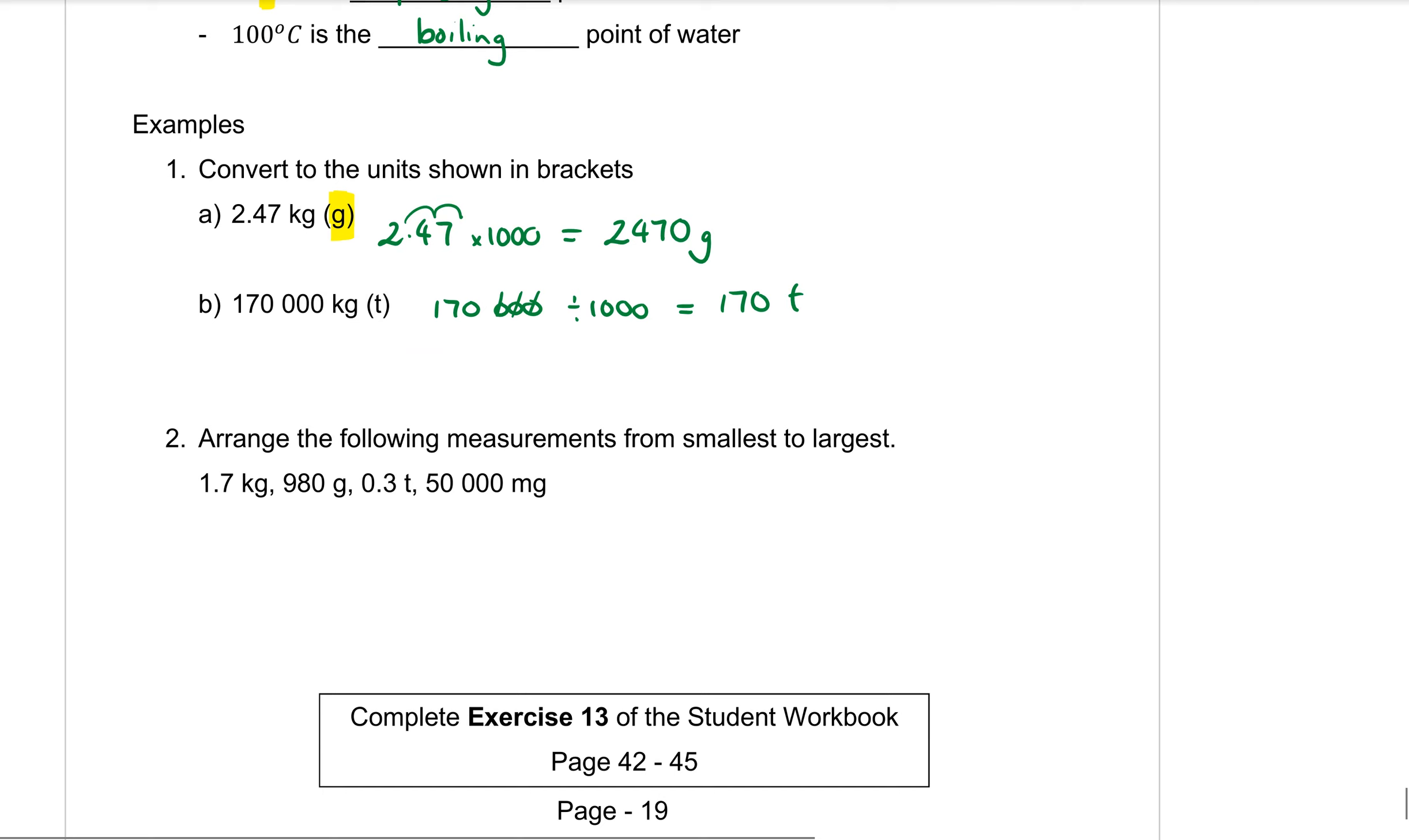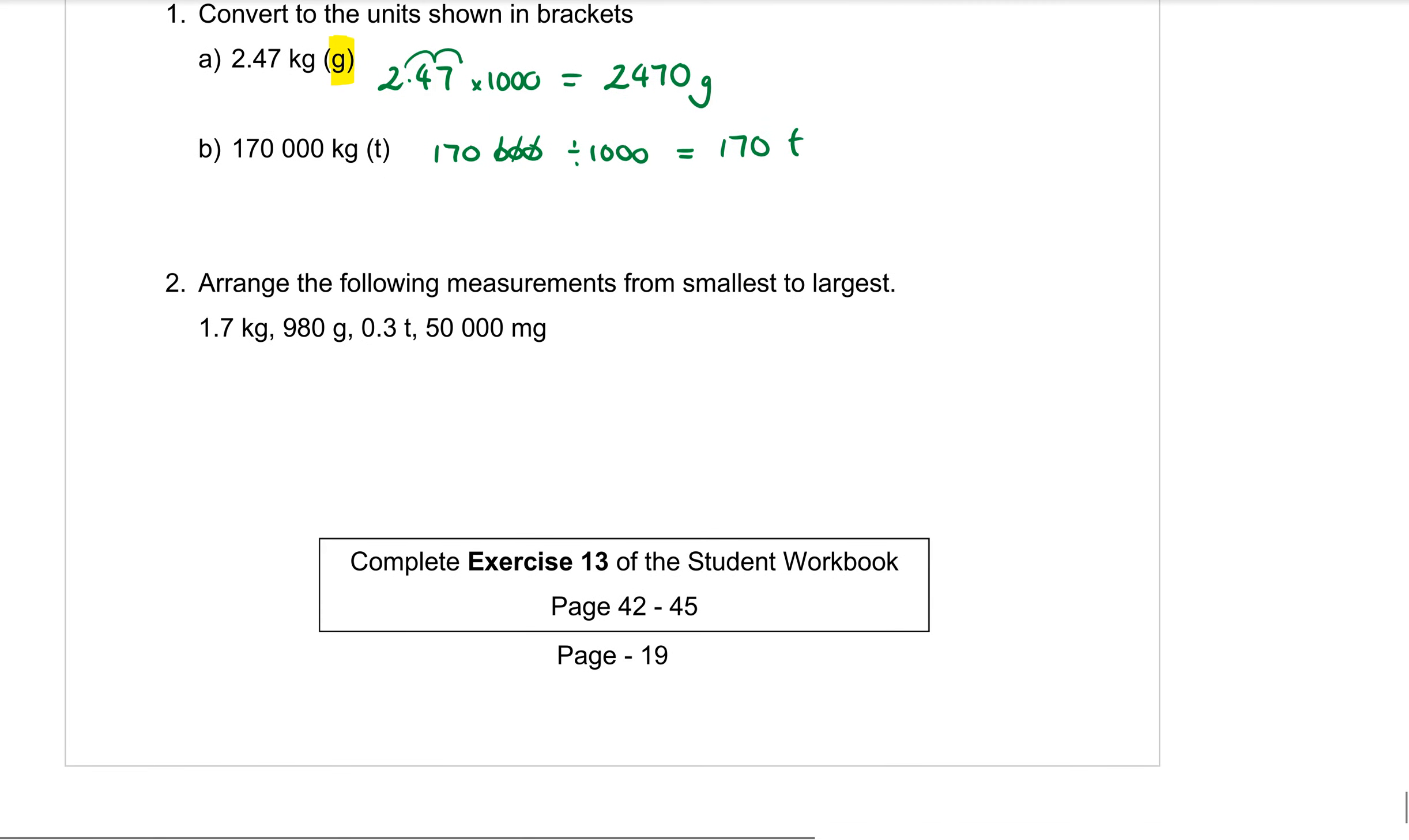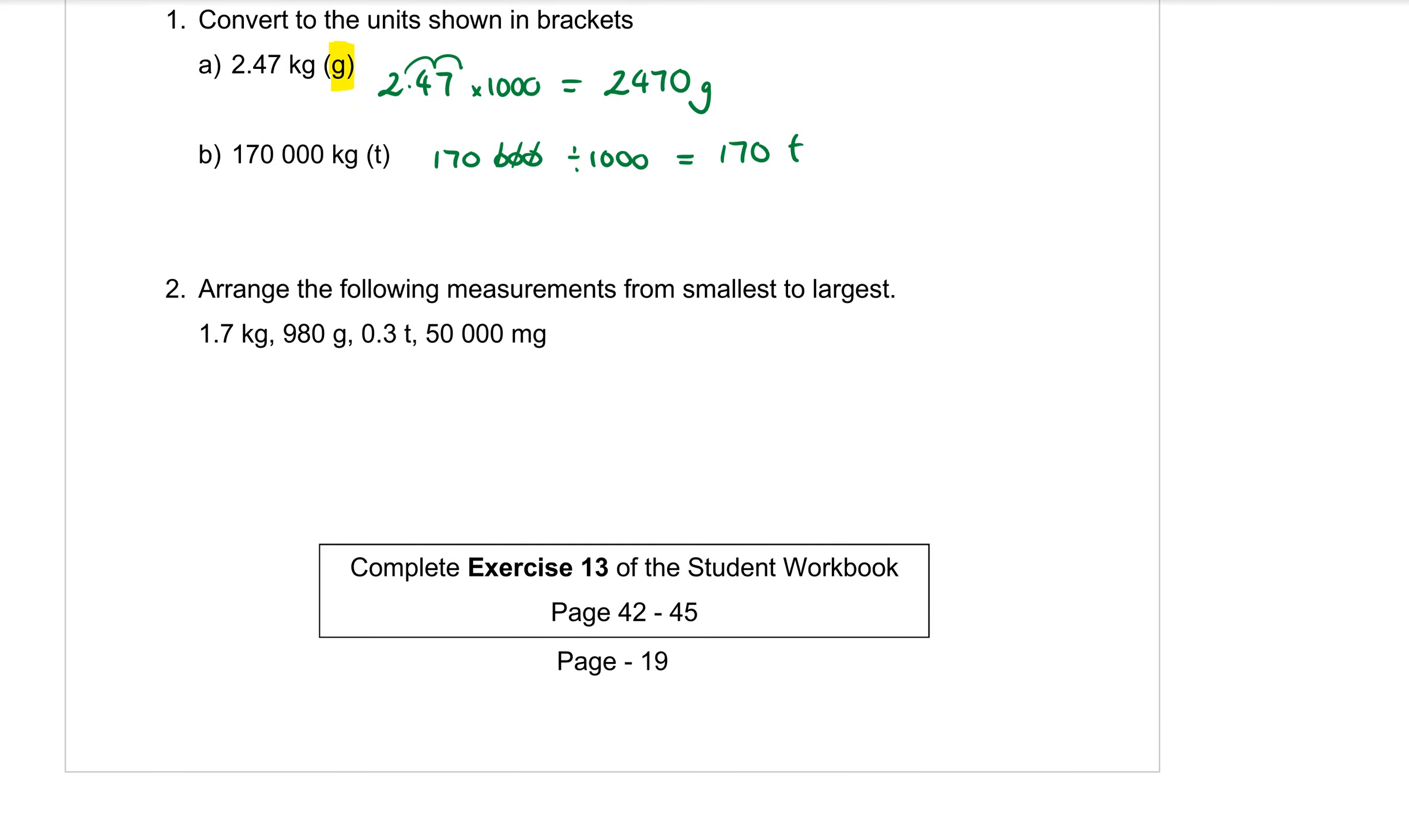Question number 2. Arrange the following measurements from smallest to largest. This is tricky to do when they all have different units. We have 1.7 kilograms, 980 grams, 0.3 tons and 50,000 milligrams. What we want to do is pick one unit to change them all into so that we can compare them. I might choose grams.